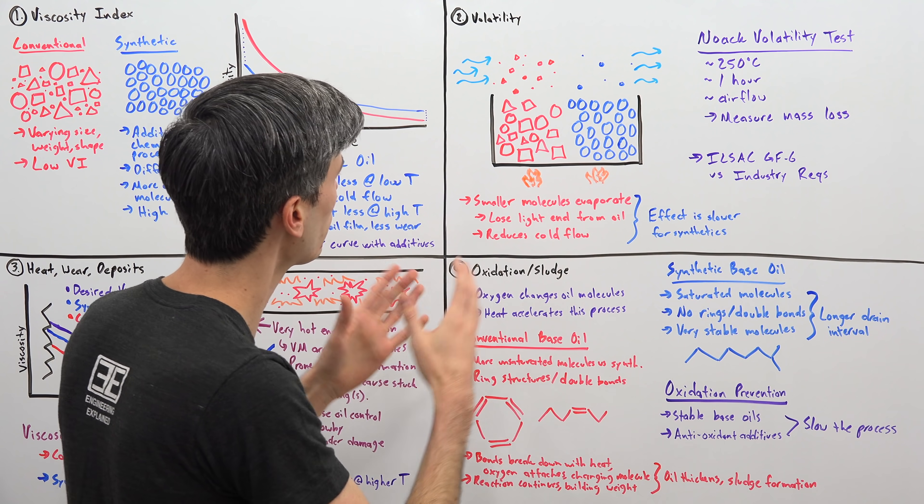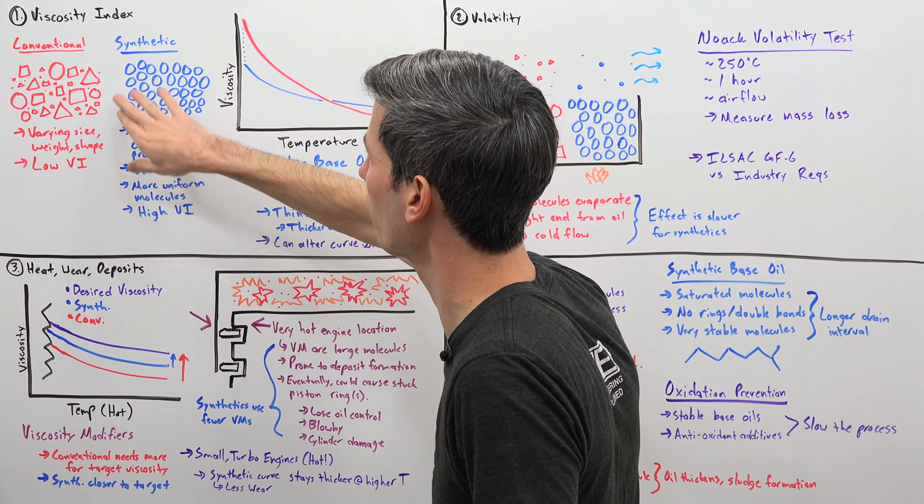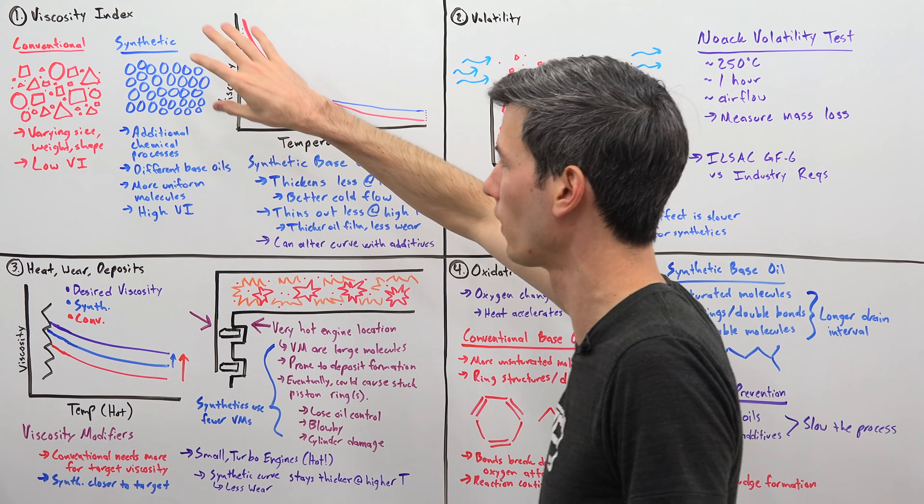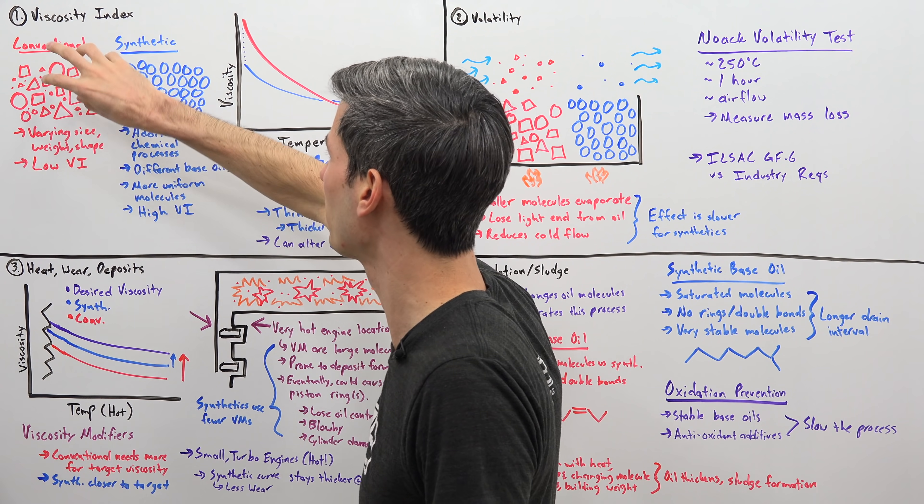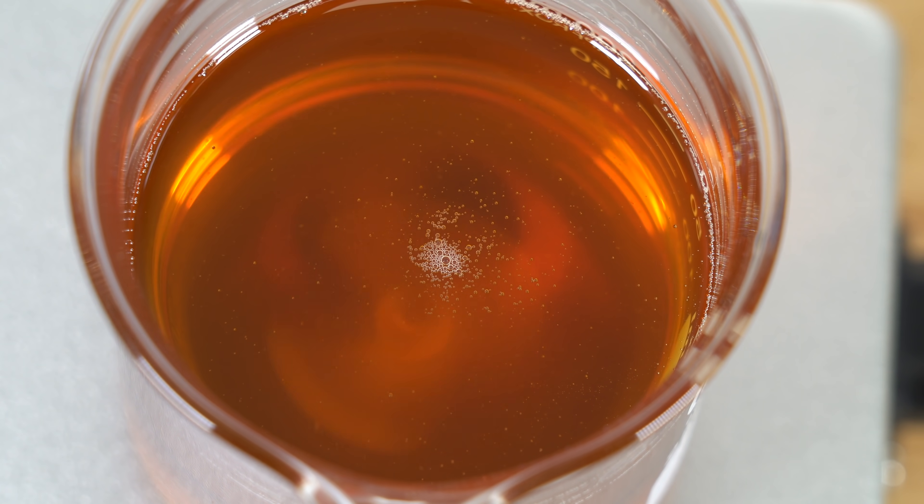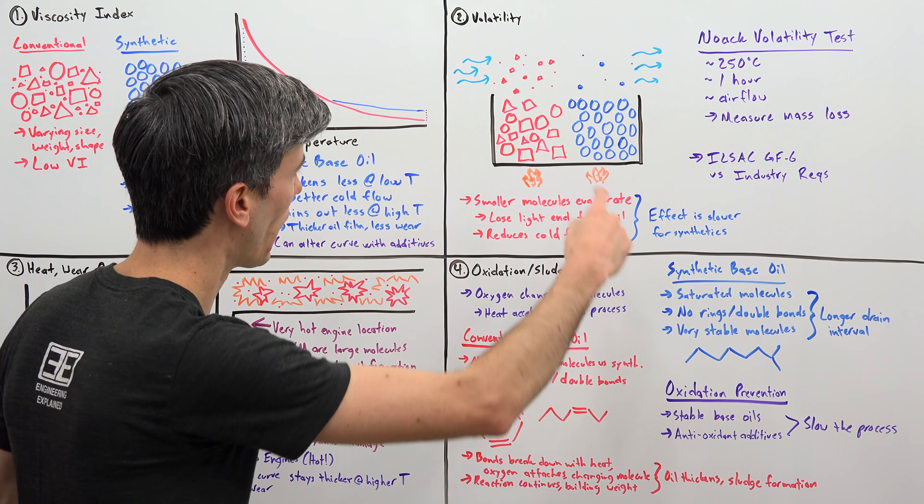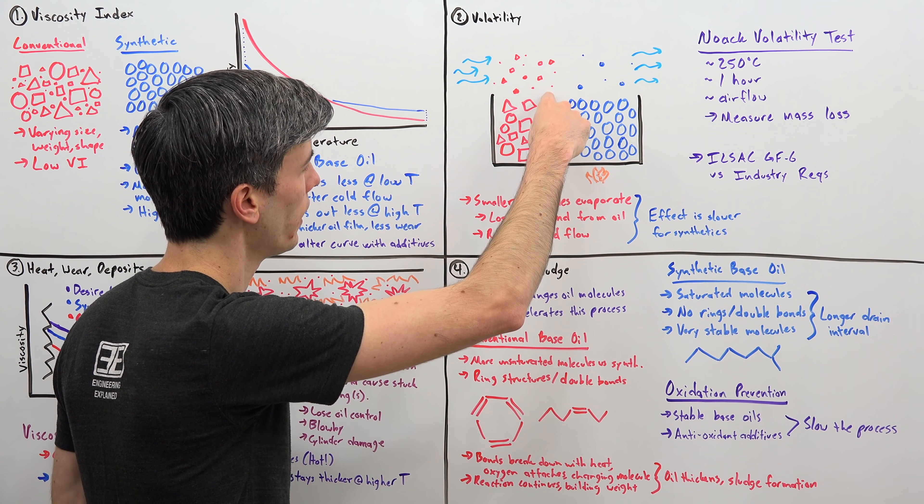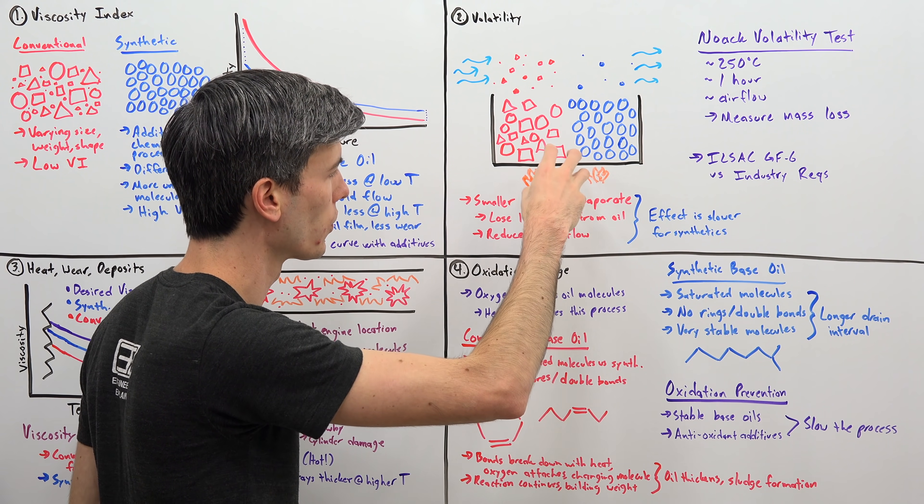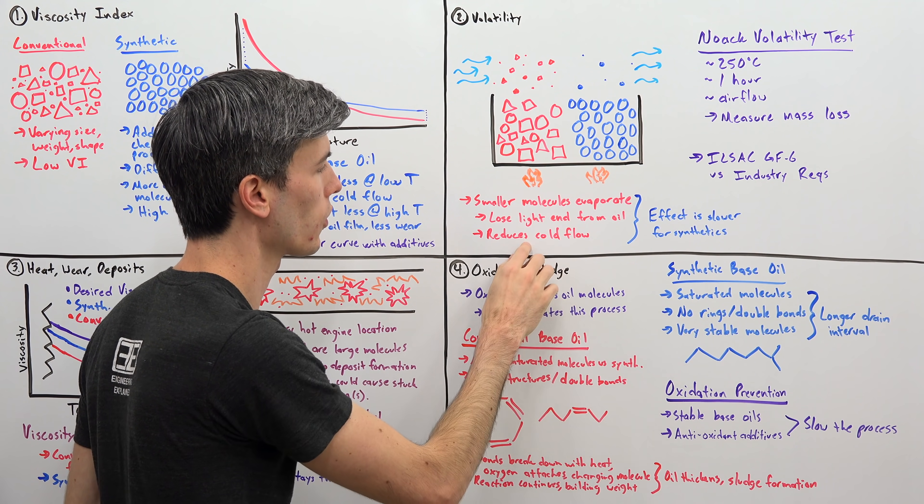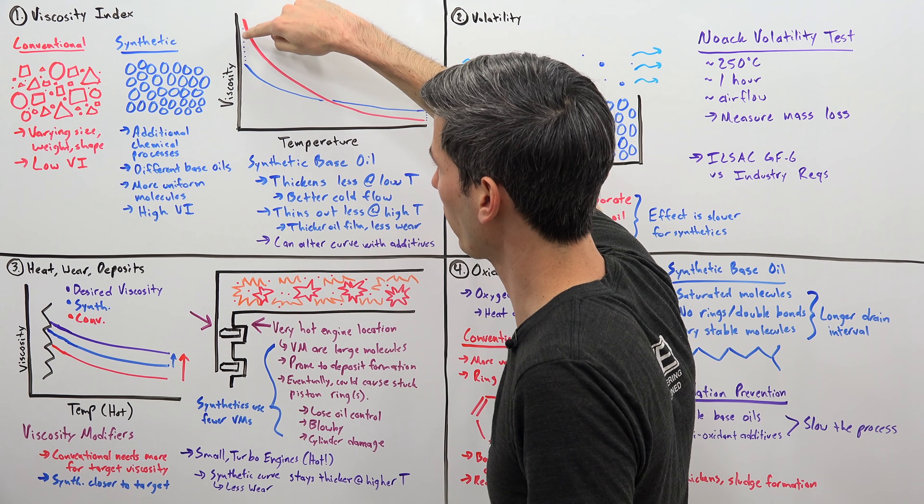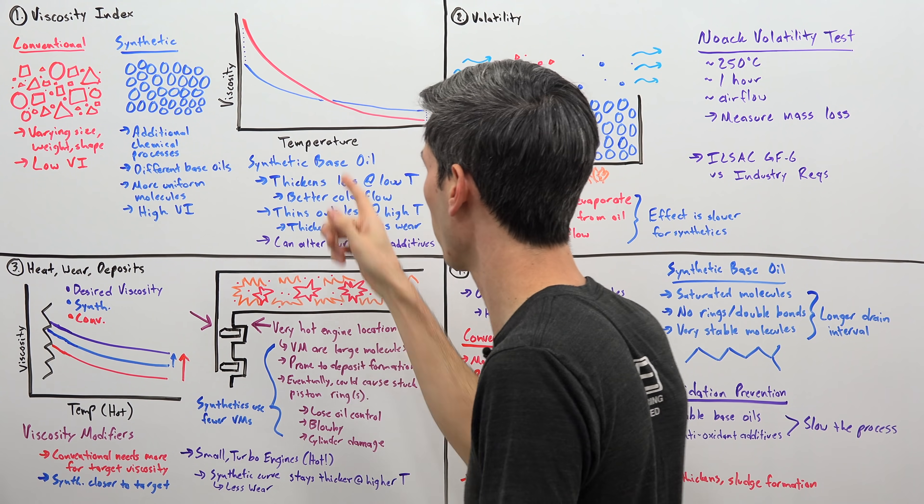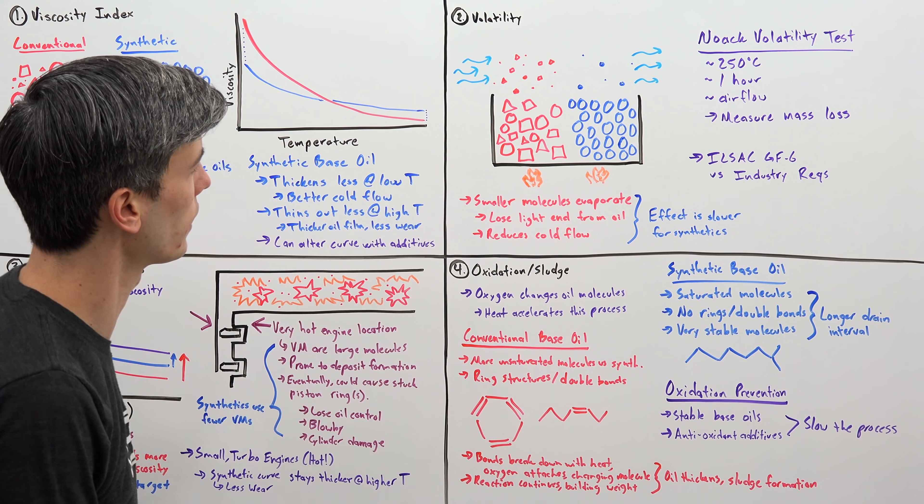The challenge with conventional oils, if we go back to that uniform shape that makes up synthetics versus the varying size of conventionals, because they have so many very small molecules within it, that lighter end is much more susceptible to evaporating off. So what starts to happen? As you start to lose that lighter end, you're left behind with the heavier larger molecules. This starts to reduce your cold flow. Now your cold flow is even worse as the viscosity increases further as you decrease in temperature. So not a good thing to happen.